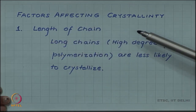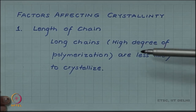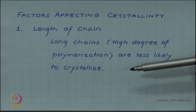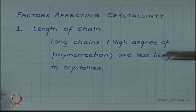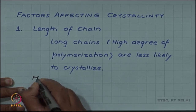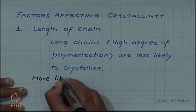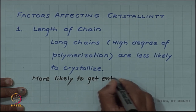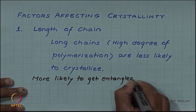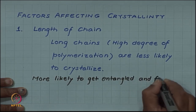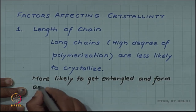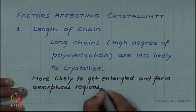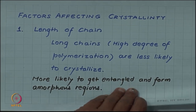One of the factors affecting crystallinity is the length of the chain. If you have a long chain — that is, a high degree of polymerization — then these chains are less likely to crystallize. This is simply because long chains are more likely to get entangled and form amorphous regions. So longer chains are less likely to crystallize.